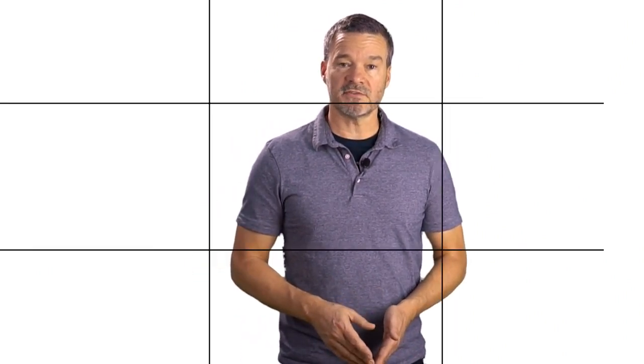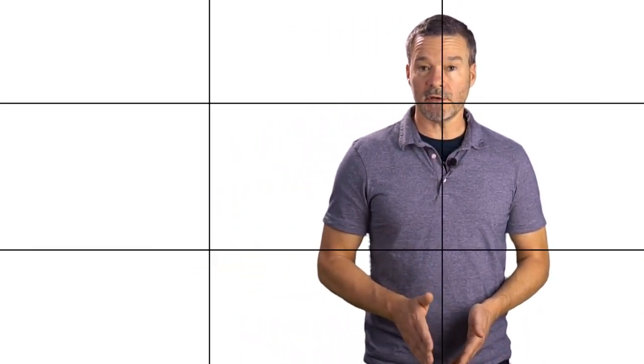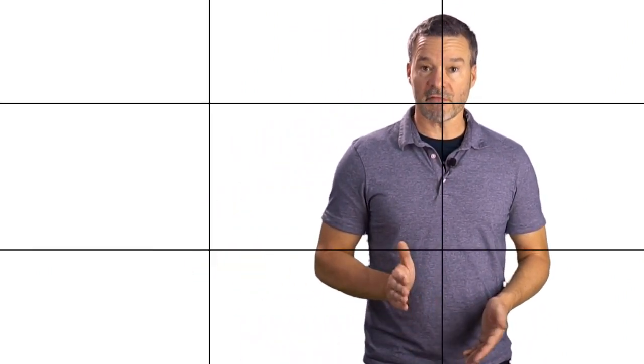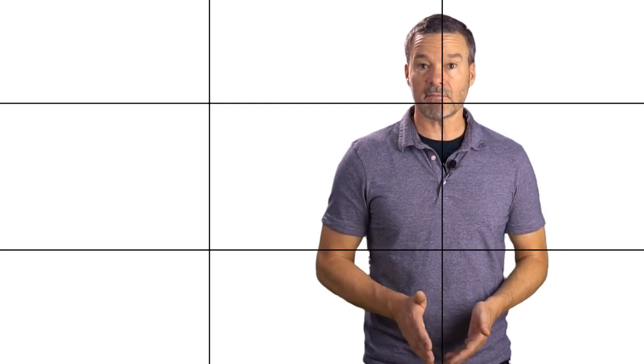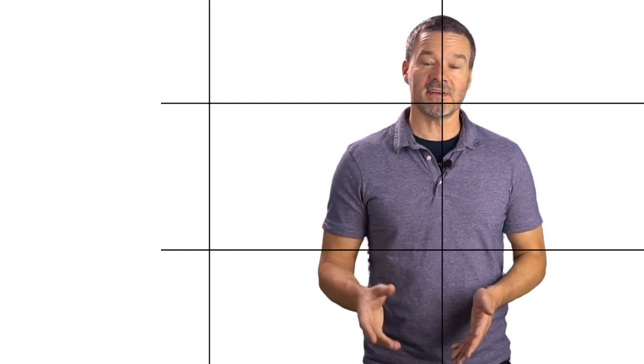So here's your recipe. Step number one: move your subject around so that your subject will be on one of the third lines in the frame. Step number two: adjust your frame so that any interesting elements that are in the background will also be on one of the third lines.